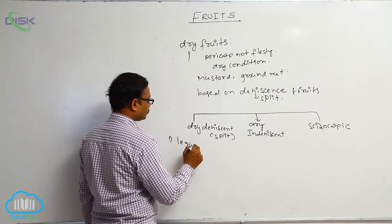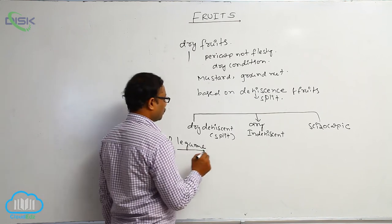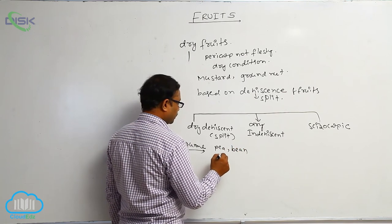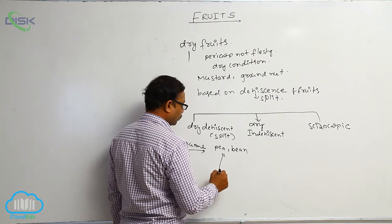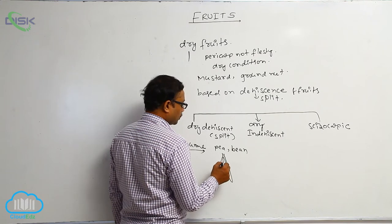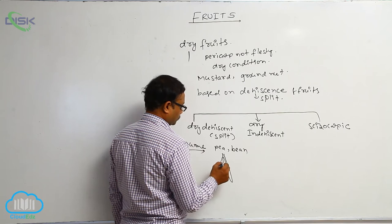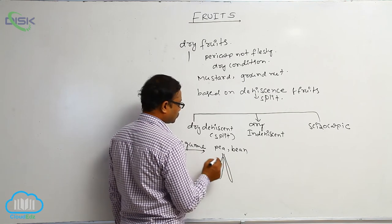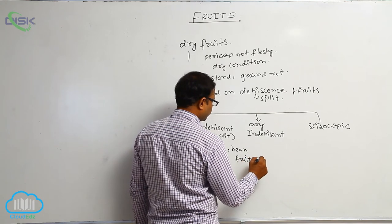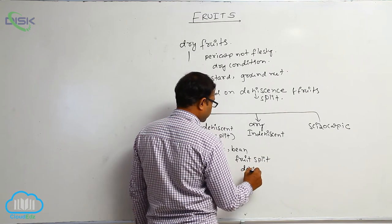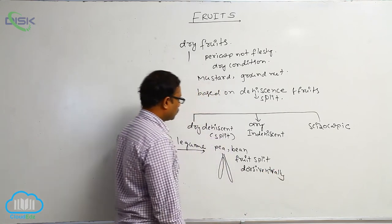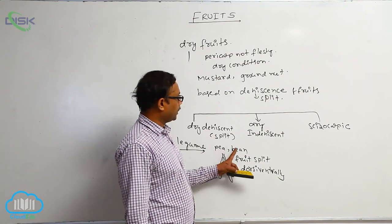In legume — for example, in pea or bean — at the time of mature condition, this fruit breaks down dorsi-ventrally, at the dorsal side and ventral side. Both break down, and then seeds are liberated from that fruit. So that is known as a legume. The fruit splits dorsi-ventrally. Example: pea and bean.